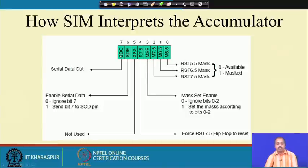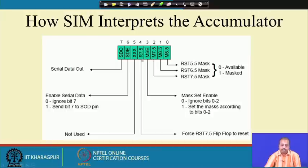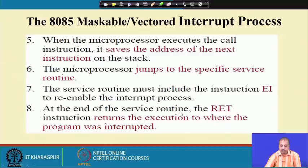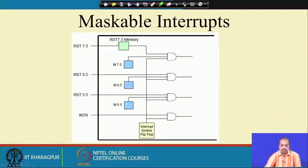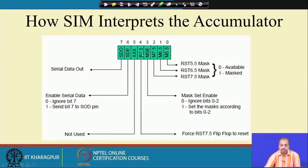If you want the mask bits to be set, make the MSE bit 1 and the pattern will be applied to the mask flip-flops of the interrupts. The R 7.5 bit allows setting or resetting the RST 7.5 flip-flop. The accumulator has to be set to the required value and then the SIM instruction executed.